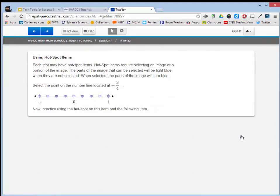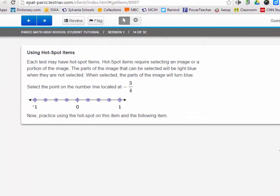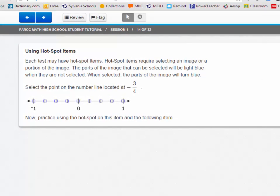Let's talk first about hot spot items. Each test may have hot spot items. Hot spot items require selecting an image or a portion of an image. The parts of the image that can be selected will be light blue when they are not selected. When selected, the parts of the image will turn blue. This is fairly simple. The blue in this window indicates that you can select on something to demonstrate your answer.